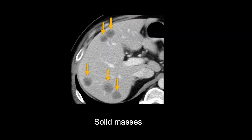Finally, there are solid masses, which often enhance less than the liver tissue, but do not appear as dark as a cyst. These masses can be benign or malignant. Multiple round masses like this are suspicious for metastases and would require further evaluation.